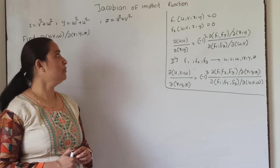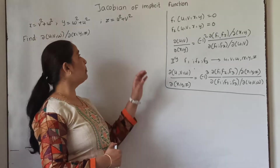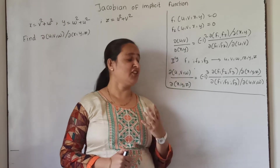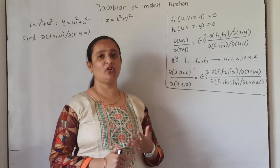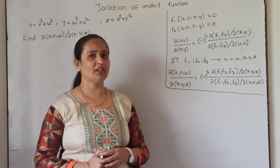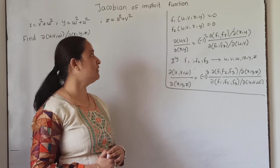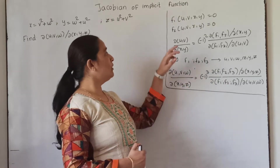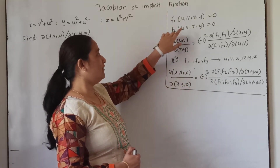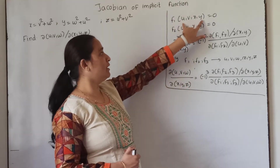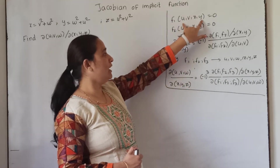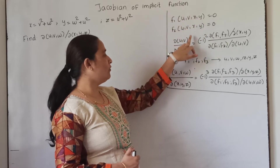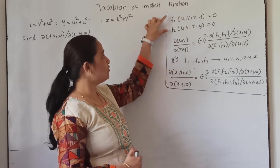Greetings and welcome. Today we will see the topic: Jacobian of Implicit Functions. An implicit function is one where you are not able to separate the variables. Suppose you have two implicit functions f1 and f2 between the variables u, v and x, y, and we want to find the Jacobian of uv with respect to xy.